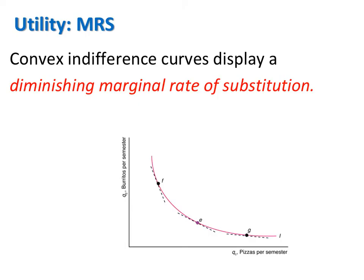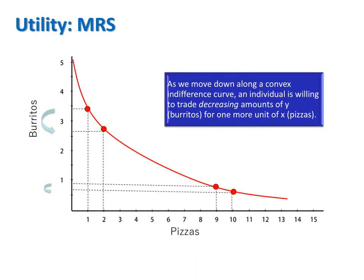Usually we draw indifference curves as downward sloping and convex to the origin. Convex indifference curves display a diminishing or decreasing marginal rate of substitution. In other words, the MRS gets smaller and smaller as we move down along the indifference curve from left to right. The fact that the MRS is getting smaller means the curve is flattening out, and for every additional unit of the good on the x-axis, the consumer is willing to give up smaller and smaller amounts of the good on the y-axis. As we move down along a convex indifference curve, an individual is willing to trade decreasing amounts of good y for each additional unit of good x.